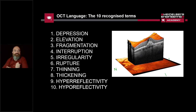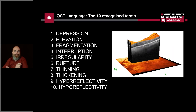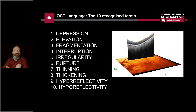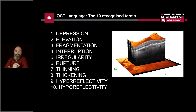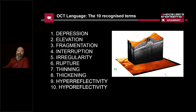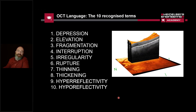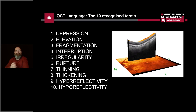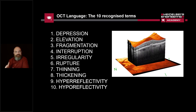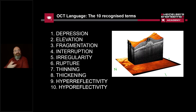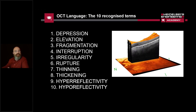Some people use slight variations on these, but these are the widely commonly used recognised terms. What we wanted to do in the Academy was come up with a way to help educate eye care practitioners — a way of memorising these words when trying to describe OCTs. The terms are: depression, elevation, fragmentation, interruption, irregularity, rupture, thinning, thickening, and crucially, hyperreflectivity and hyporeflectivity.